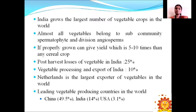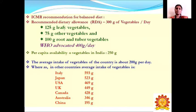The post-harvest losses of vegetables in India account for 25 percent, and vegetable processing and export from India is about 10 percent. The Netherlands is the largest exporter of vegetables in the world. The leading vegetable-producing countries are China and Japan at 49.5 percent, India at 14 percent, and the USA at 3.1 percent.